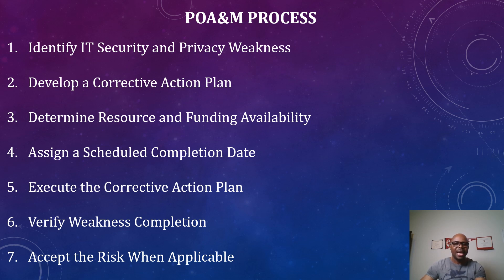Step five: execute the corrective action plan. Go ahead and execute it — let the point of contact begin working to ensure those findings have been remediated. Step six: verify finding and weakness completion. There must be someone assigned to verify that those weaknesses have been properly remediated, such as an ISSO, a PUEM manager, or a PUEM analyst, who can validate and verify that the findings have been completed.